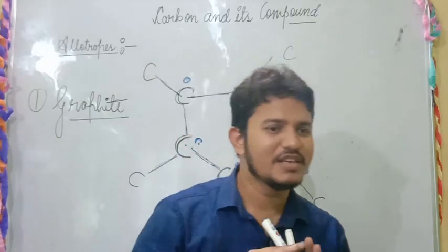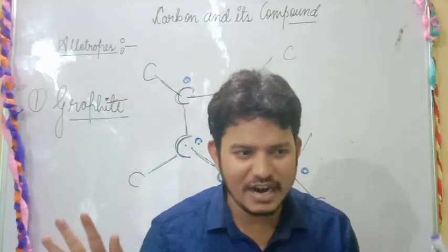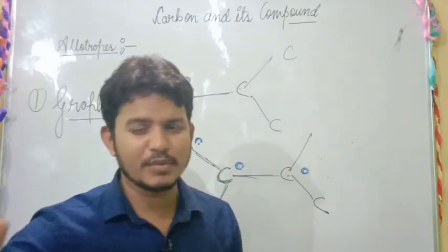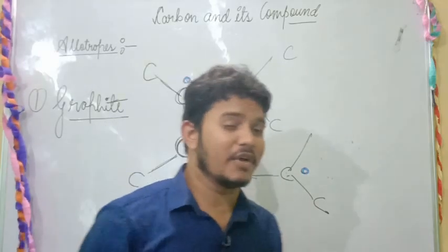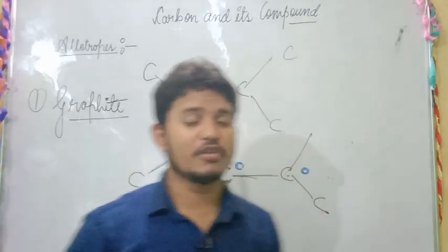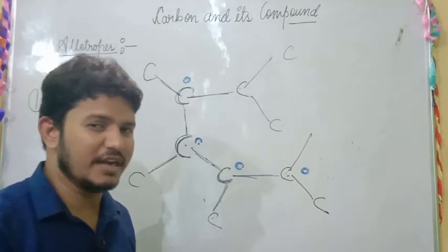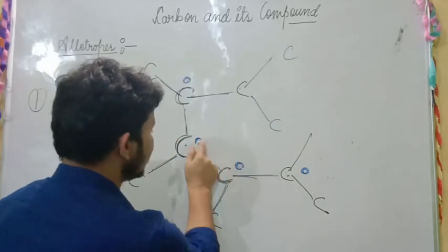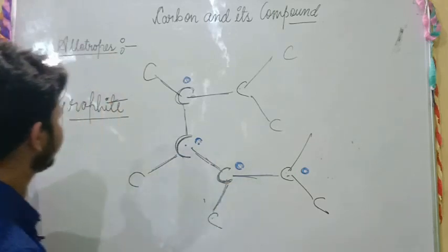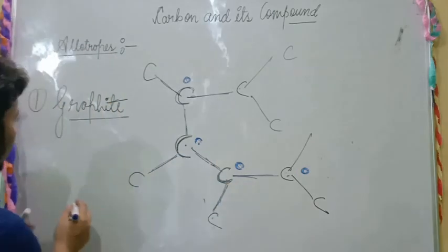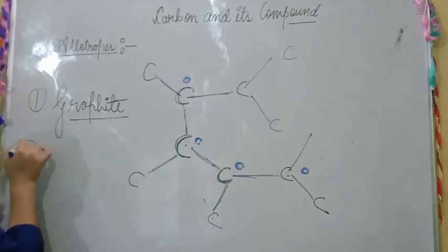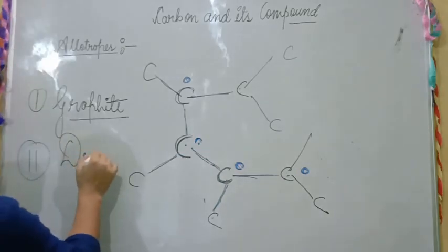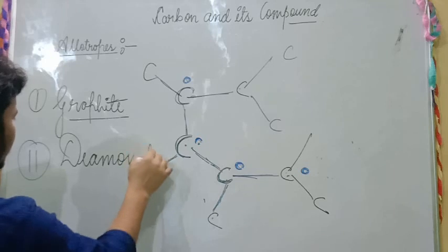The arrangement in graphite is planar — they are arranged layer after layer in a two-dimensional structure. Because of this planar layered structure, graphite is slippery in touch and soft, not hard. If someone asks why graphite is soft, the answer is its planar layered arrangement; and why it conducts electricity — because each carbon atom has one free electron.